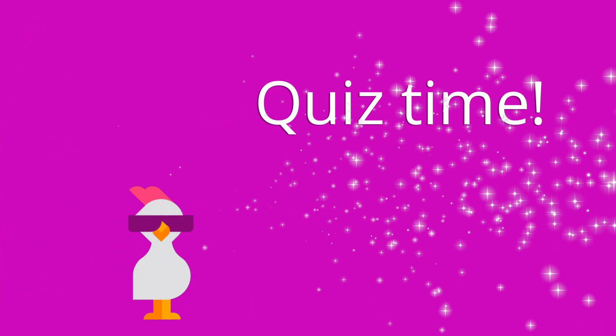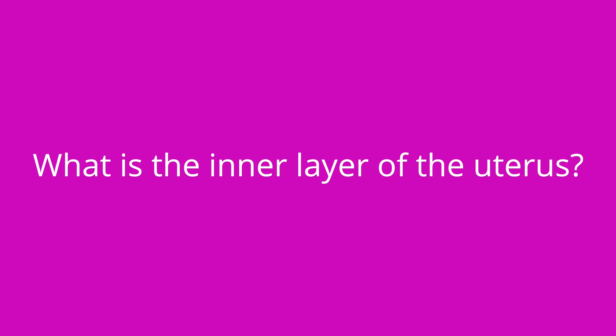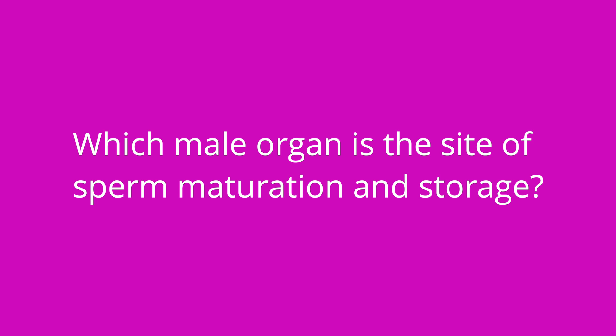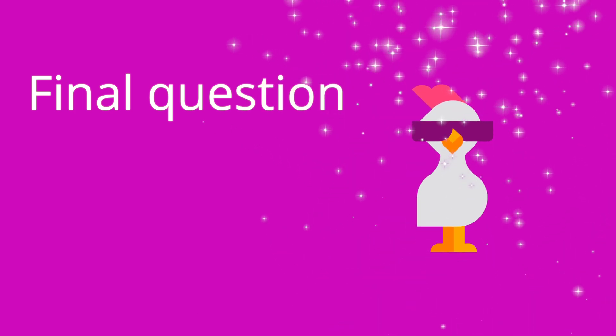It's quiz time — I have three questions for you. Question one: what is the inner layer of the uterus? The answer is the endometrium. Question two: which male organ is the site of sperm maturation and storage? The answer is the epididymis. Question three: which male reproductive gland surrounds the urethra and contributes alkaline fluid to the semen? The answer is the prostate gland.